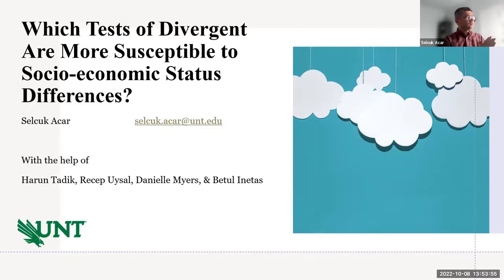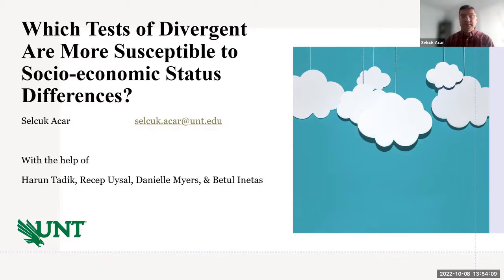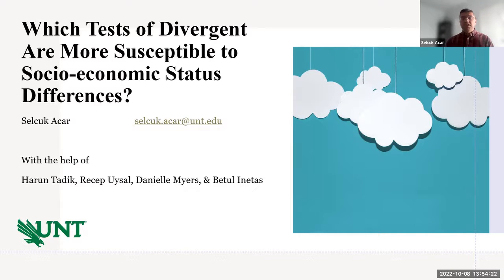The main project we were able to publish recently was a meta-analysis of socioeconomic status and creativity. As a follow-up, here I present a slice focused on divergent thinking tests and how they relate to SES. Specifically, my guiding research question was: if I know which divergent thinking test is less susceptible to SES differences, maybe those tests should be prioritized in education and assessment so that we are more inclusive.